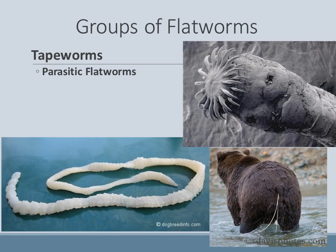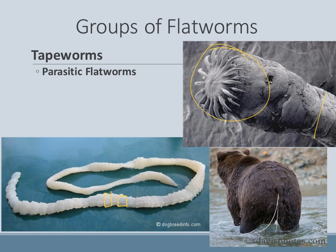There are also parasitic flatworms — tapeworms. Parasitic means it lives off of a host, so they are the parasite. The head of the tapeworm attaches to the inside of your intestines, and the small segments behind the head are called proglottids. These are basically complete reproductive units — each has a full set of reproductive structures so it can reproduce. It can live in humans, bears, and many different species.